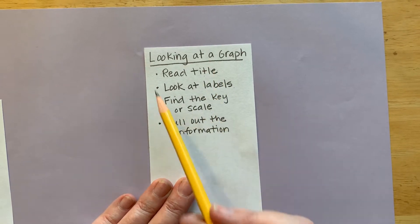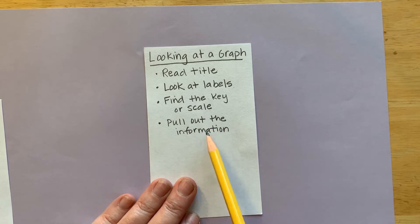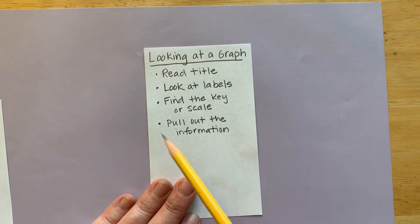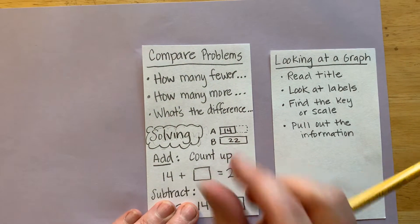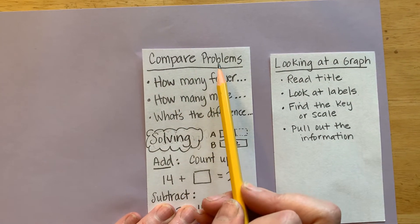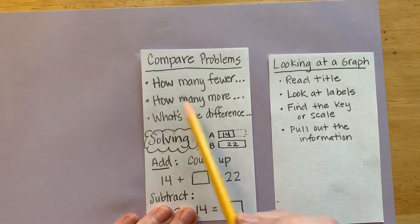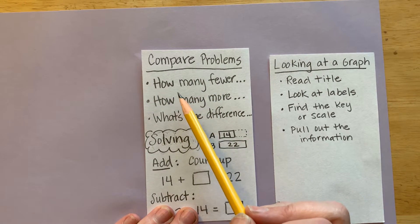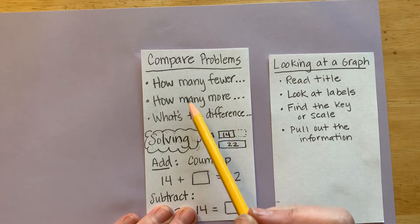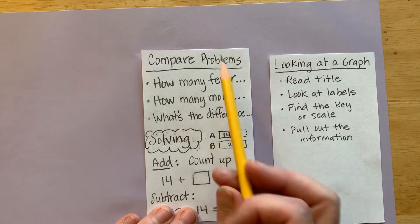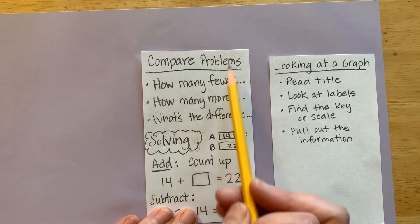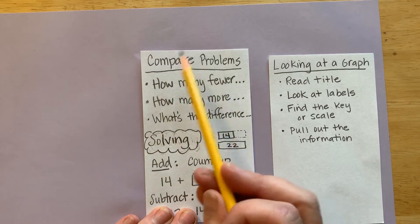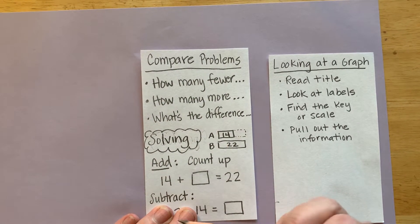Remember, if you don't have an index card, you can also just take a piece of paper and write this down in your notebook. Now, another type of problem we're working on today are compare problems. We've talked about compare problems before, but it might be a good time to write down some of this information so you can use it as we go through this lesson, because we're going to see quite a few compare problems. And if we know ahead of time how to solve them, it'll make solving the word problems easier.